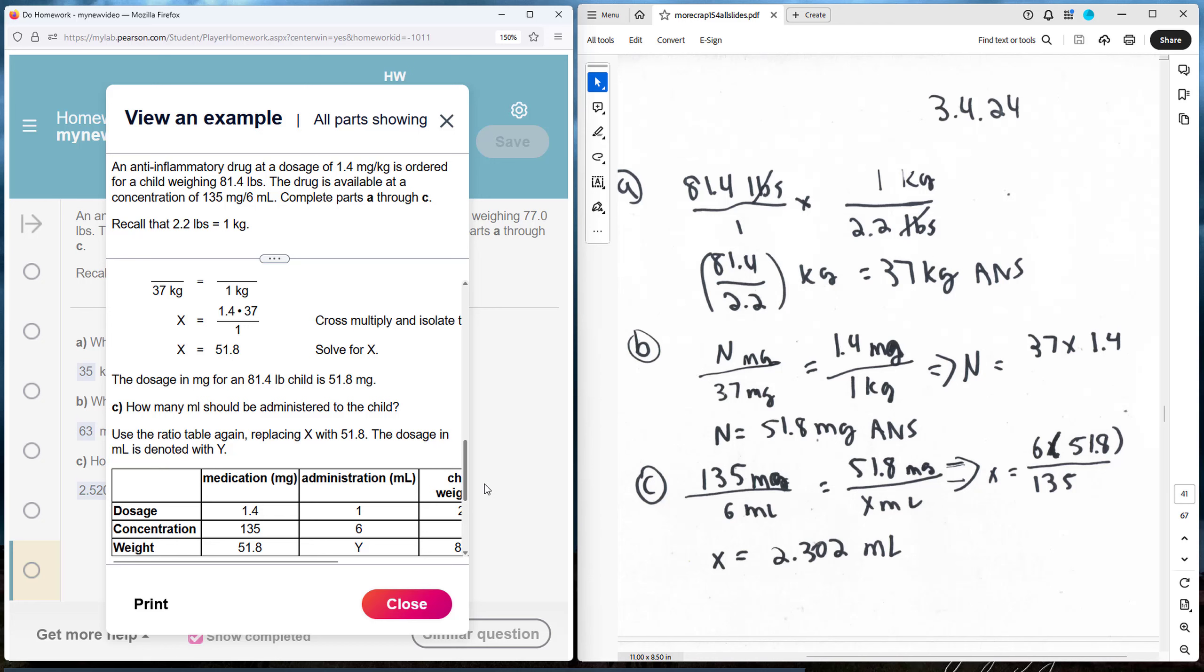And I cross multiply and divide. And that gives me 2.302 milliliters. That's how much liquid medication the child is going to need.